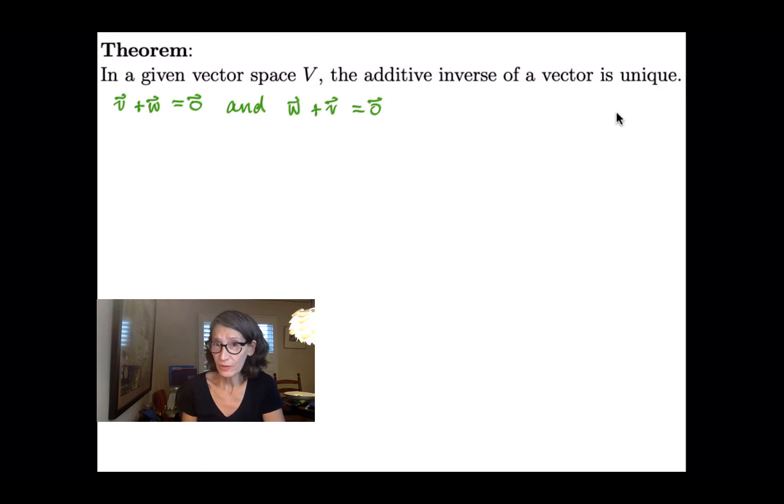Or even an ordered n-tuple of zeros. We're not talking about R2, R3, or Rn necessarily. We're talking about an abstract vector space. These vectors could be polynomials. They could be matrices. They could be continuous functions. So we cannot use n-tuples or any specific vectors.